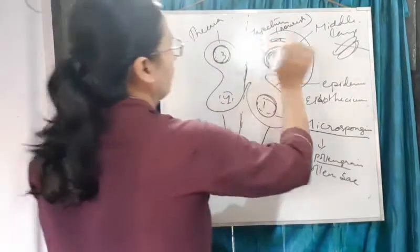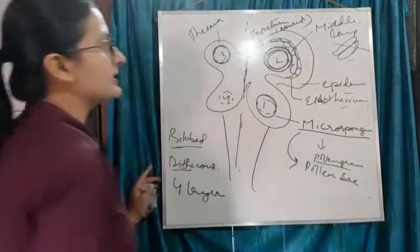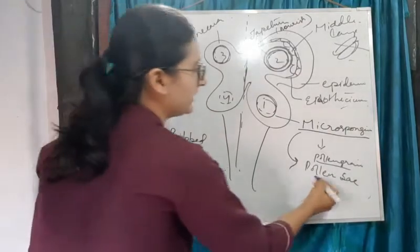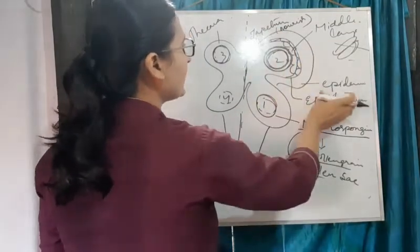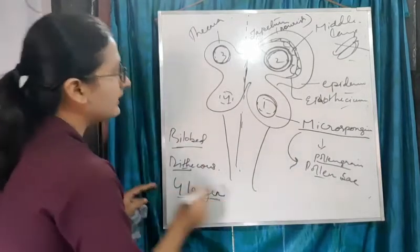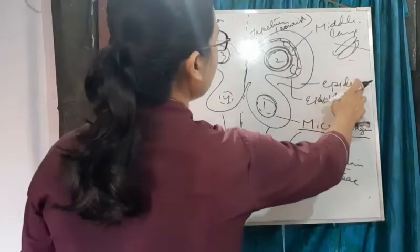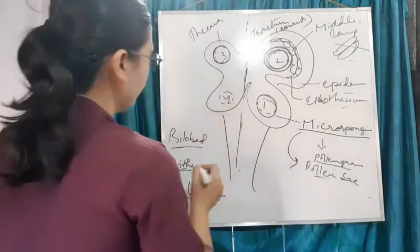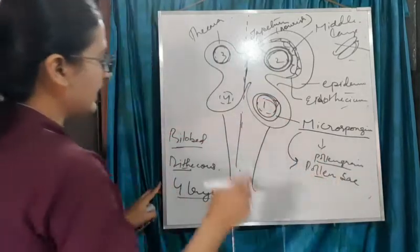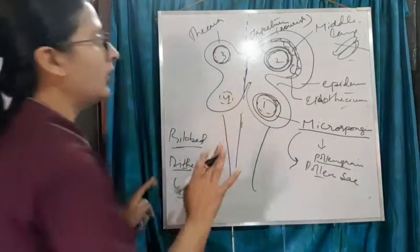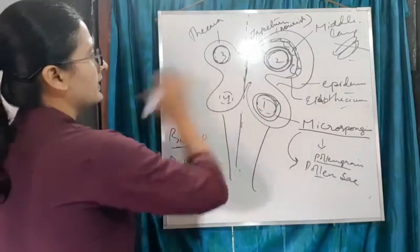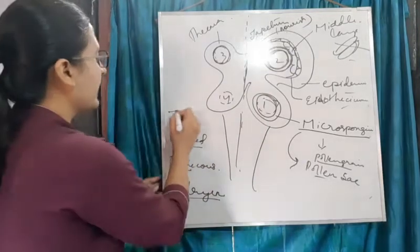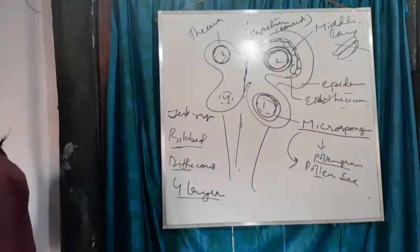The three layers - middle layer, epidermis, and endothecium - protect the microsporangium, because it is the one that produces the male gamete, the pollen grain. So the function of these three layers is to protect the microsporangium. The four layers are: epidermis (outermost), endothecium, middle layer, and tapetum. There are four microsporangia in total, and because the anther has four sides it is also called tetragonal.